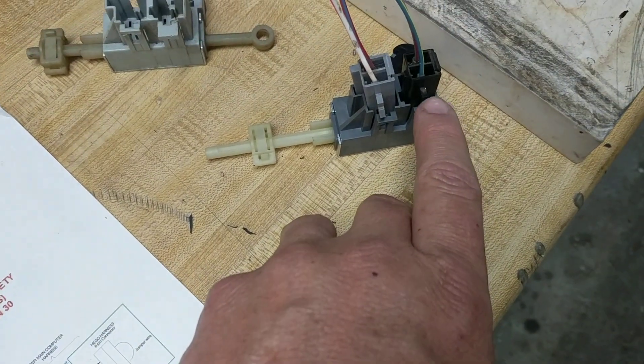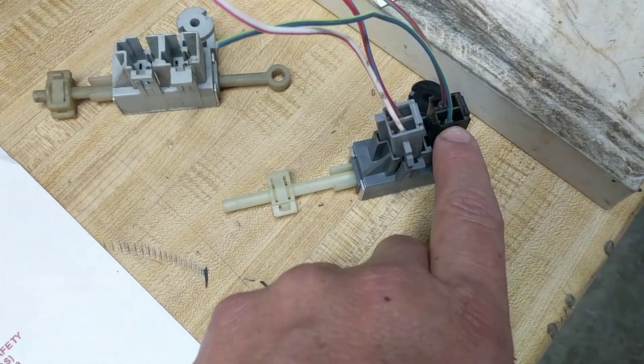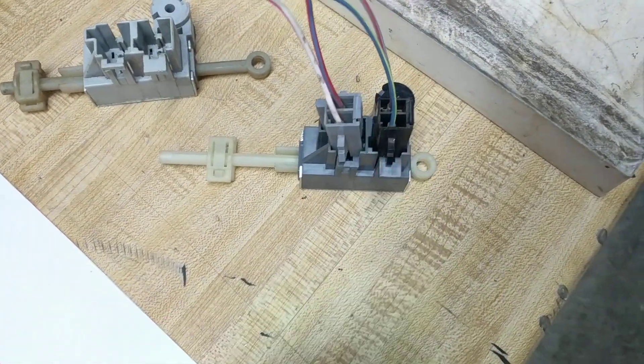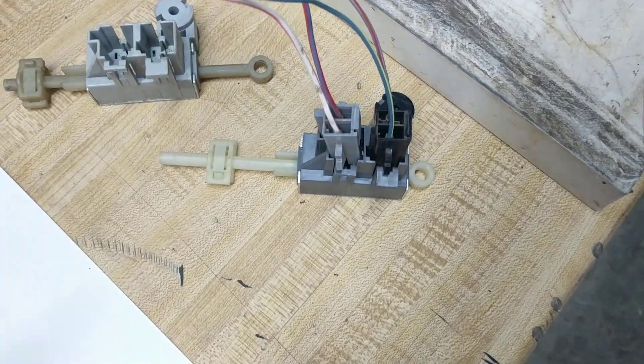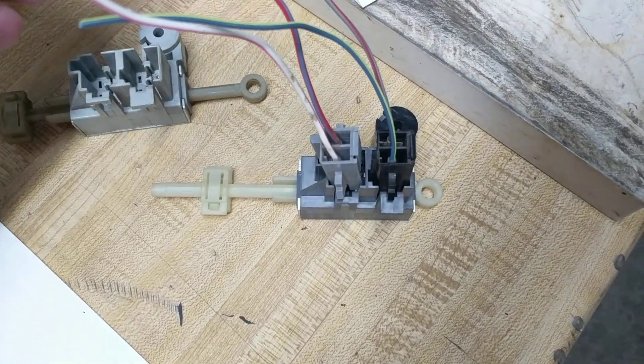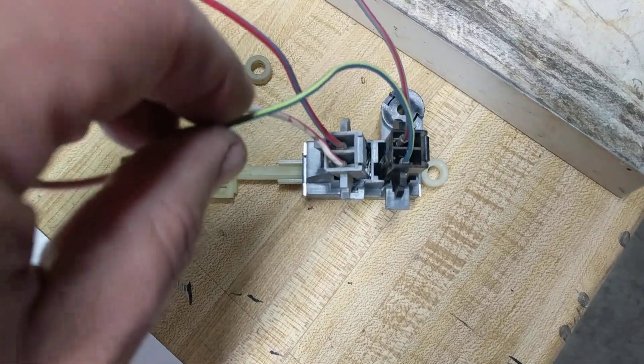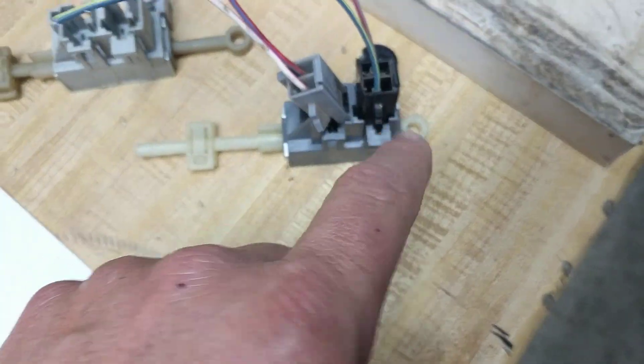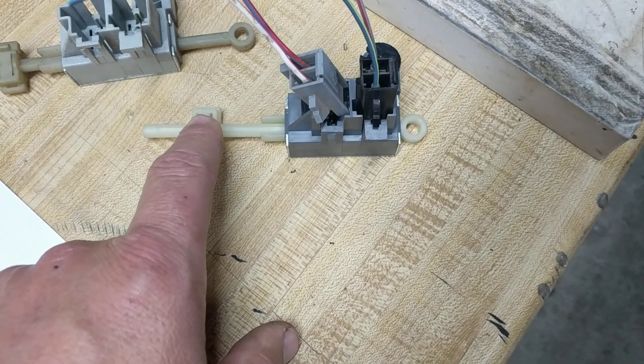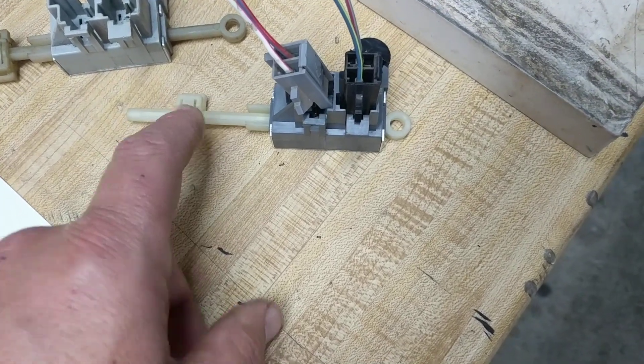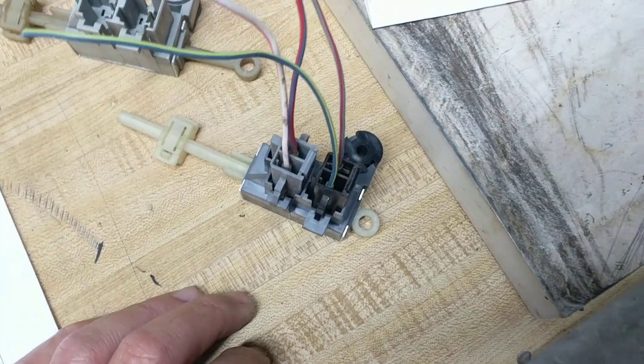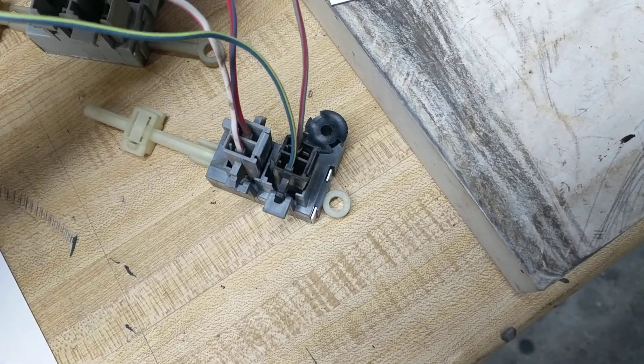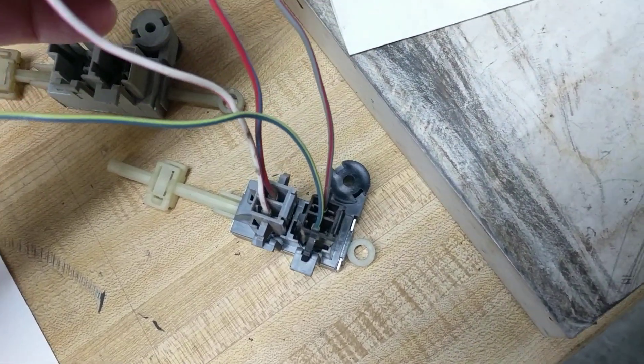So the front ones come from the EEC processor. You got pin 30, which is this one I think. This comes from the processor and it goes through the switch and it tells you when you got the clutch depressed and I think it also deals with neutral.